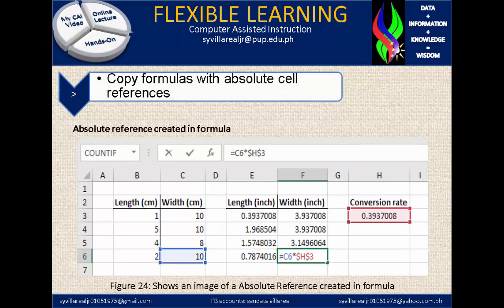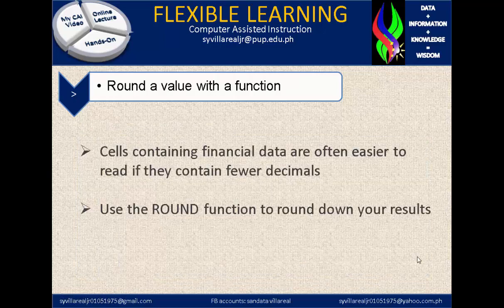In figure 24, it shows an image of an absolute reference created in a formula, which is H3. This H3 cannot be changed because it is considered to be an absolute cell reference. It has been computed through C6, which is the width in centimeters, which is 10. So 10 multiplied by 0.3937008 gives us the value.